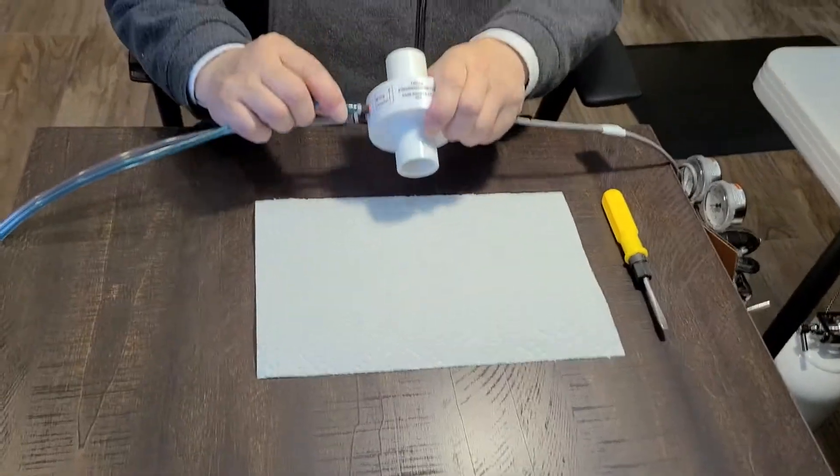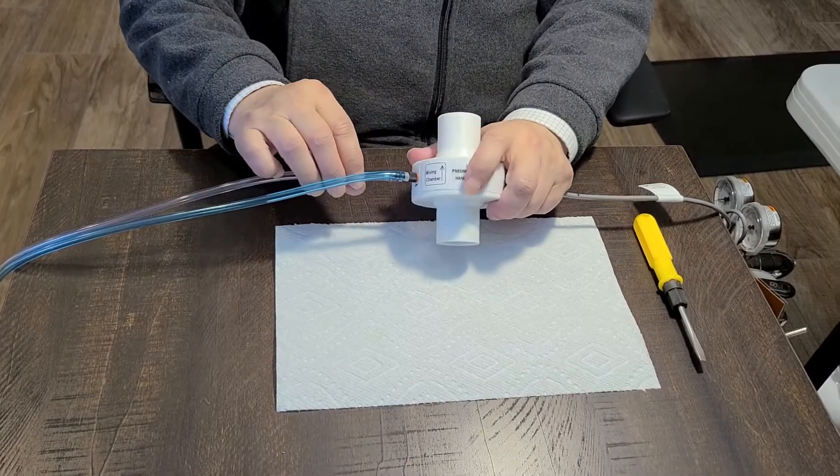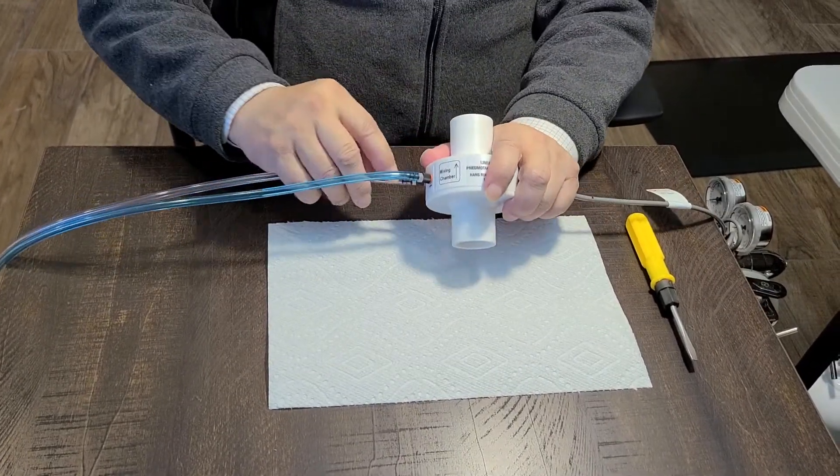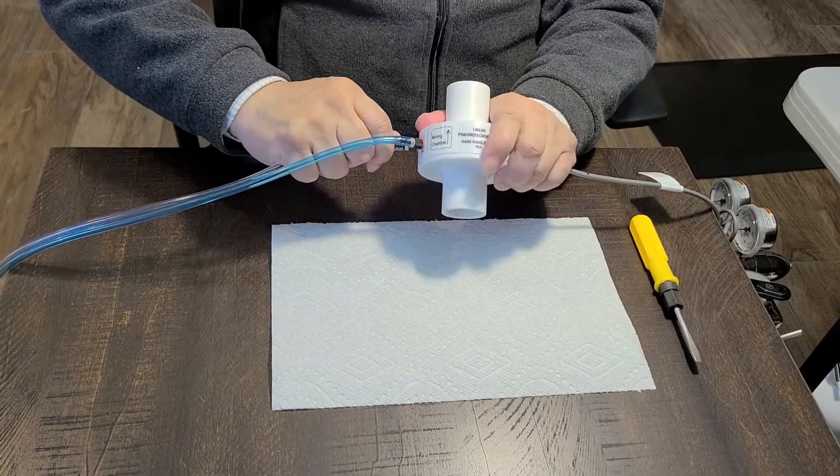The first step is we pull the blue clear tube off from the pneumotech. You need to use force and you can turn slightly clockwise.